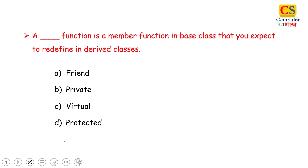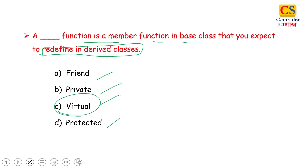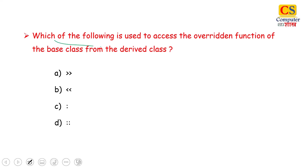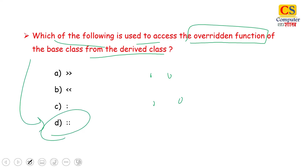Next question: A function that is a member function in a base class that you expect to redefine in a derived class uses the keyword virtual. So the answer is option C. Next: which of the following is used to access the overridden function of the base class from the derived class? We use the scope resolution operator — double colons. So the right answer is option D.